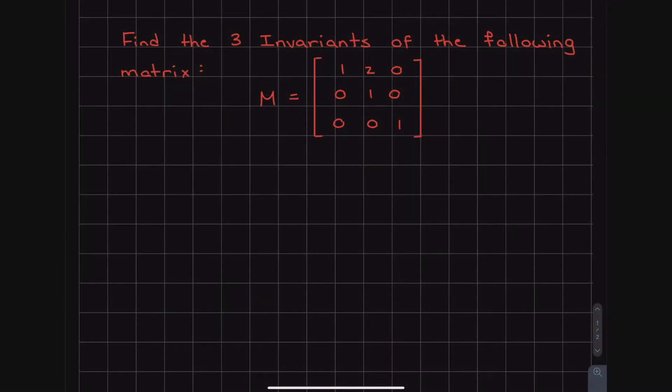All right guys. So there's one question in this quiz, which is very nice. And it says, find the three invariants of the following matrix. So M is equal to 1, 2, 0, 0, 1, 0, and 0, 0, 1. So all we have to do is go back to the formulas that we already know. And again, you should write these on the cheat sheet just to bring it to the midterm. It's open book, so why not?